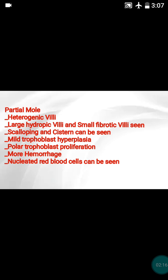Markedly trophoblastic hyperplasia is always a feature of the complete mole. There will be polar trophoblastic proliferation — that is an important point. The trophoblastic proliferation is localized and polar at a particular area; it does not surround the whole villi. If you see trophoblastic proliferation surrounding the whole villi, it's a complete mole. There will also be more hemorrhage due to the fetal component, and nucleated red blood cells can be seen because fetal parts are present.